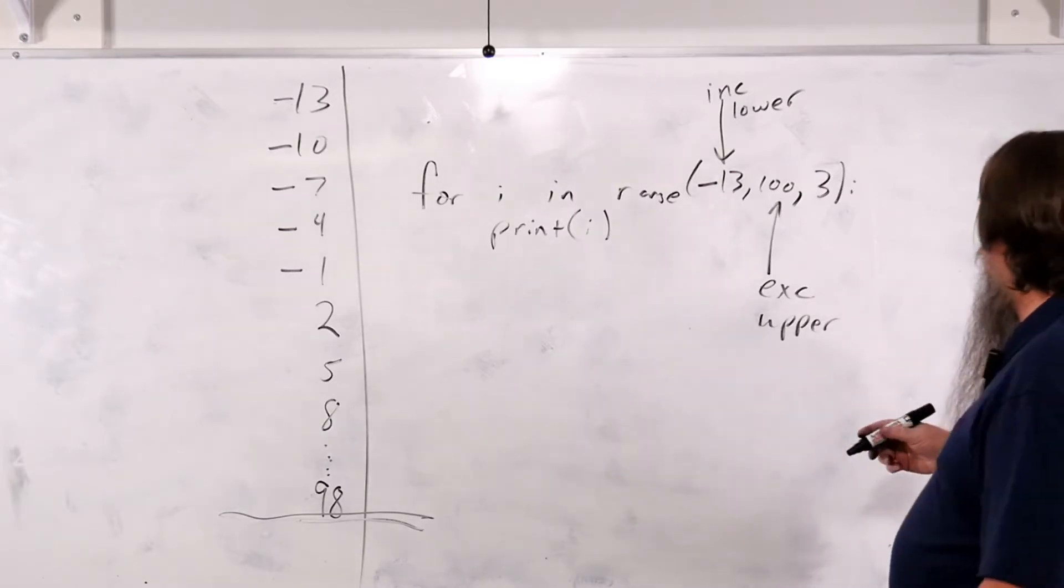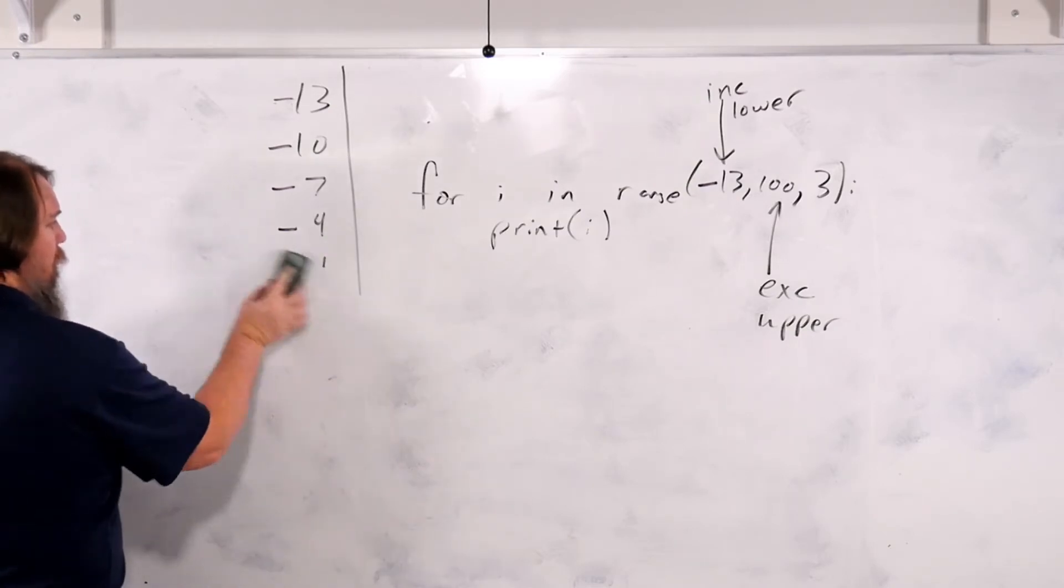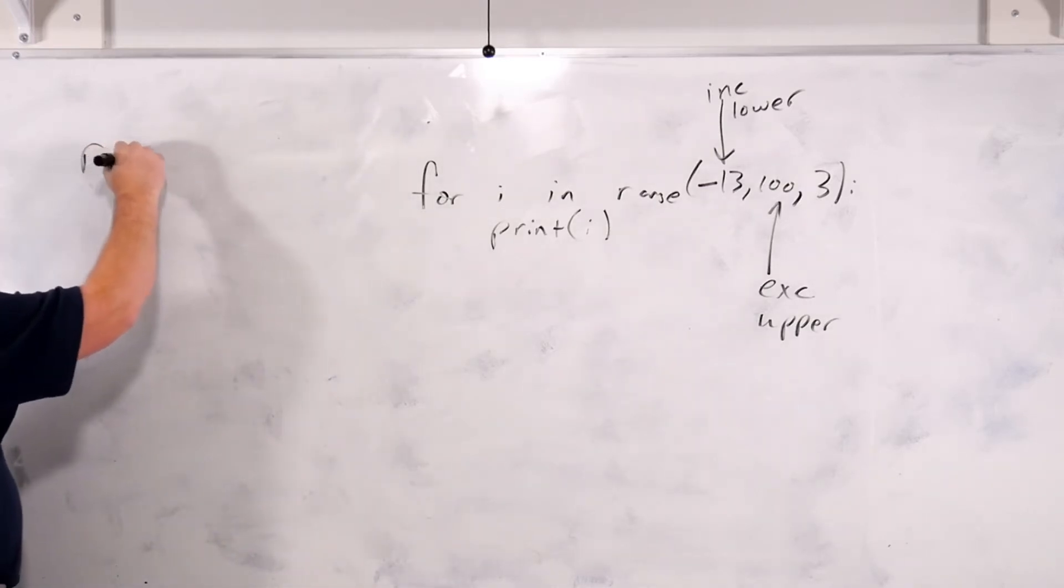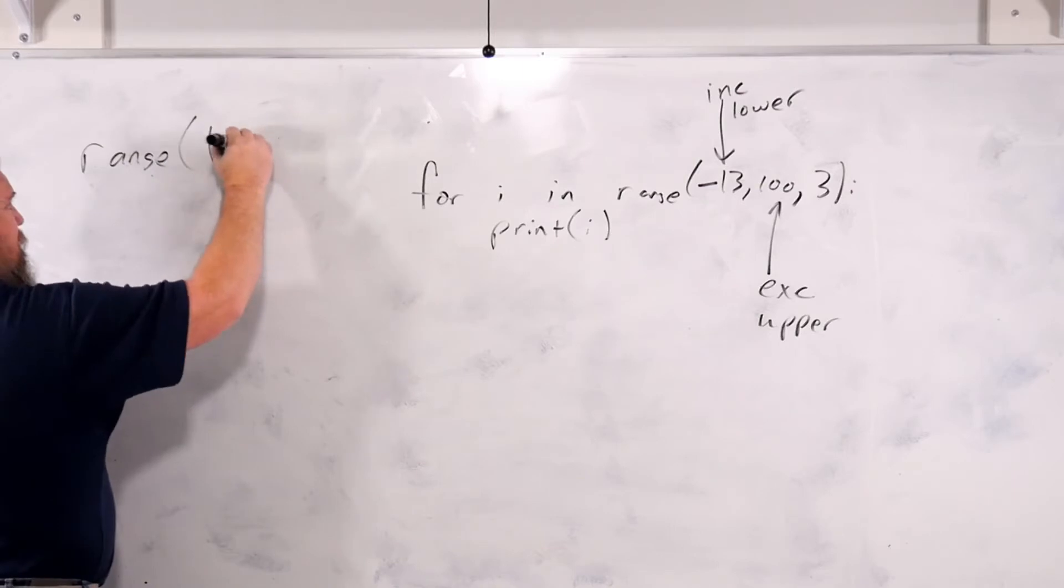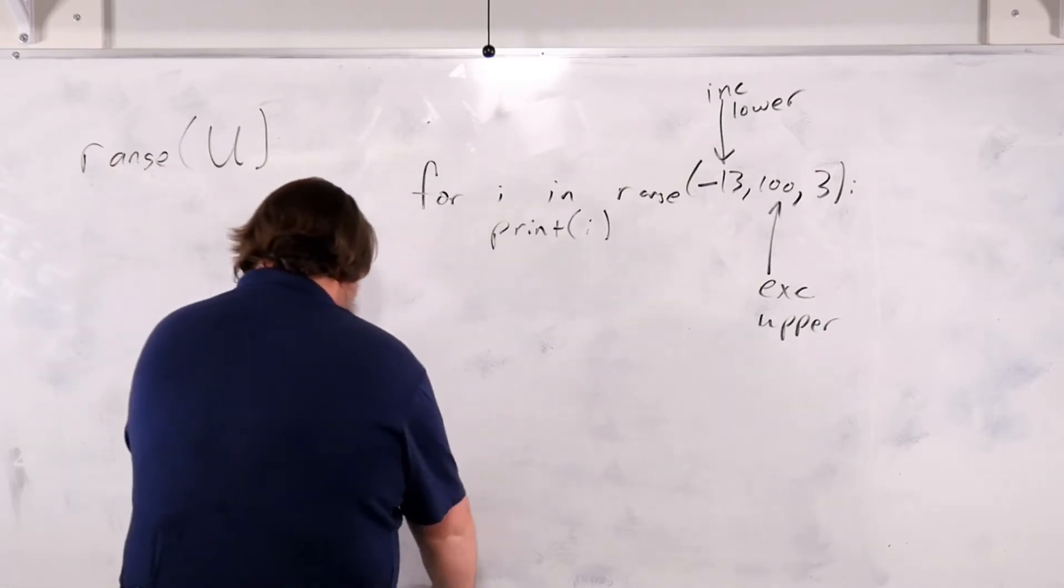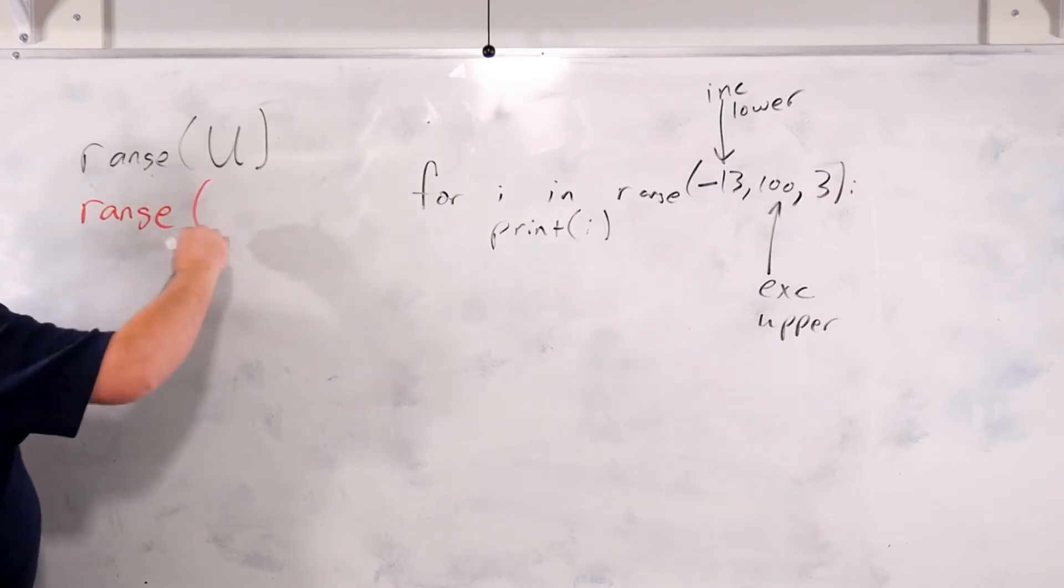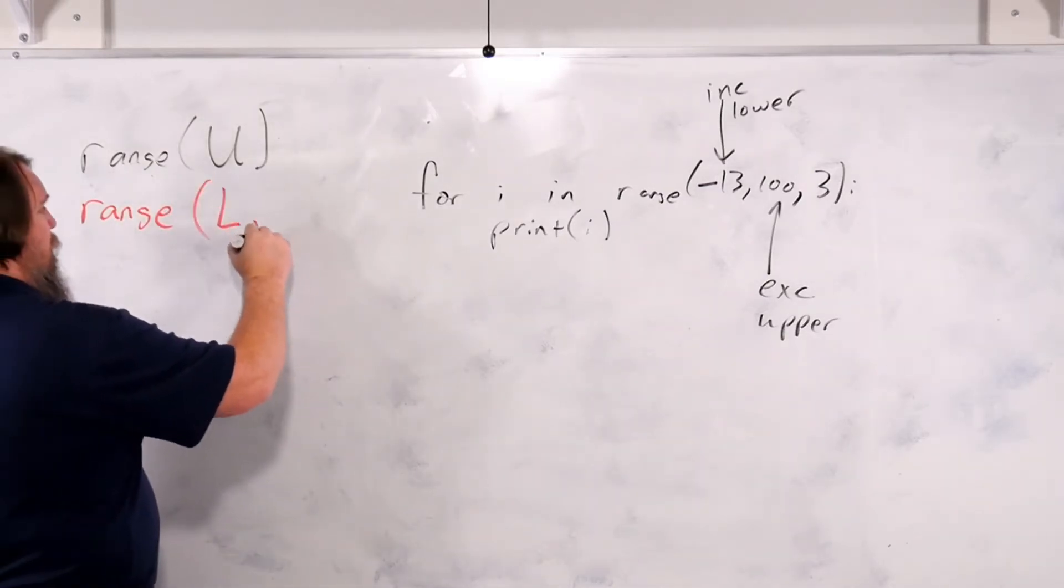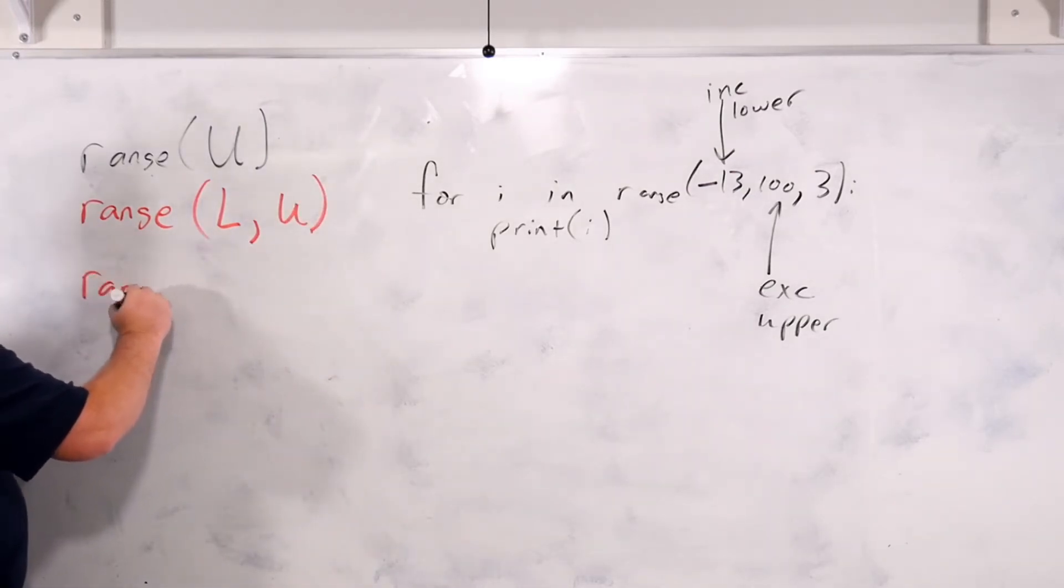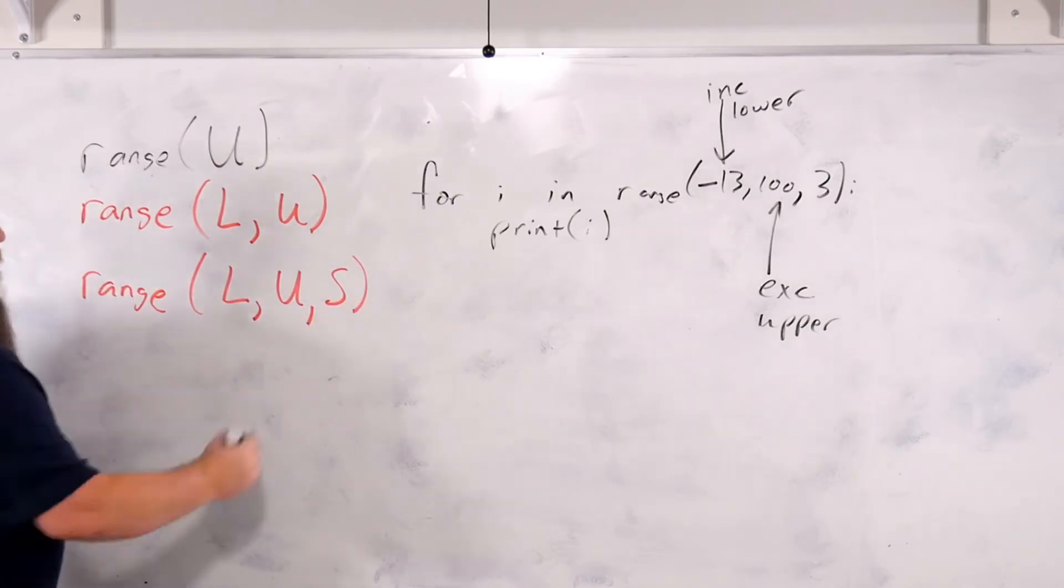So we have three forms of range now. We have a range with a single variable, in which case it is the upper bound. This pin is starting to die as well. So we have range with two parameters. That is a lower bound and an upper bound. If range has three parameters, then it is the lower bound, the upper bound, and the step value.